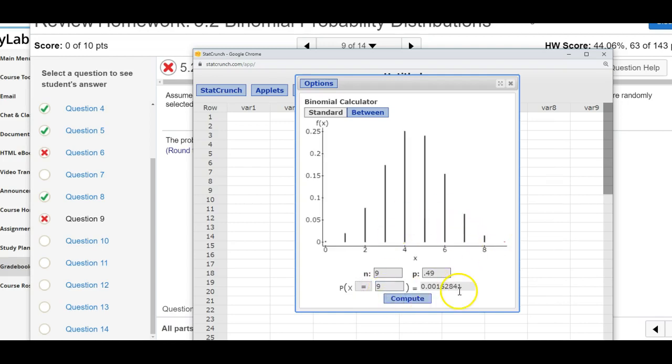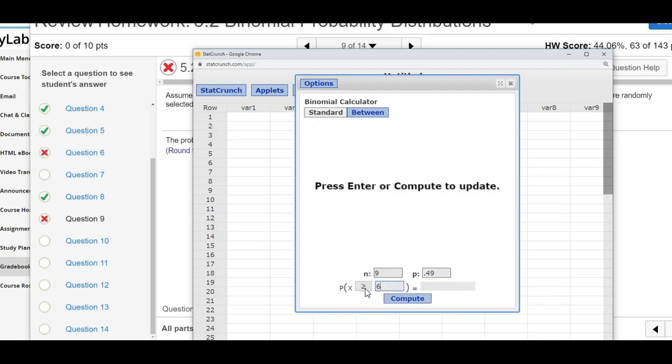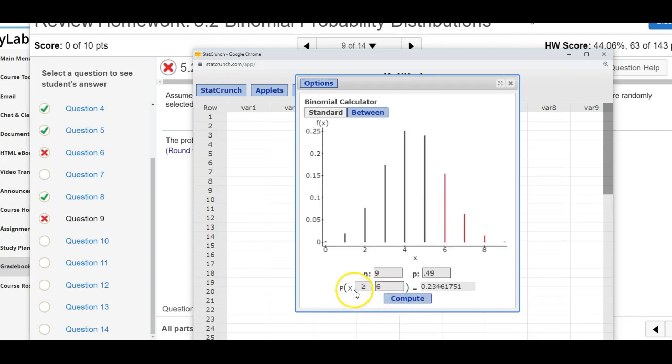And if we compute all of them, you add all those numbers together, you'll get your answer. But here the calculator allows us to do the probability that X is greater than or equal to six, and that comes from the at least six, and that gives us the answer there.